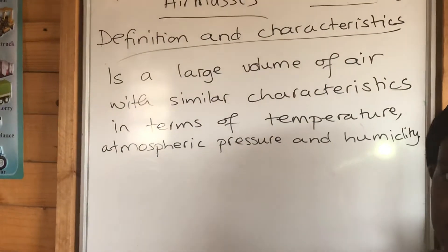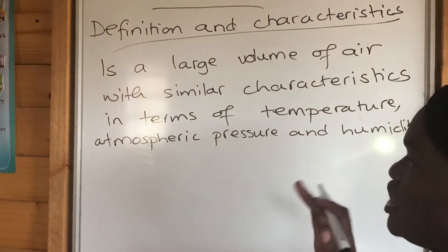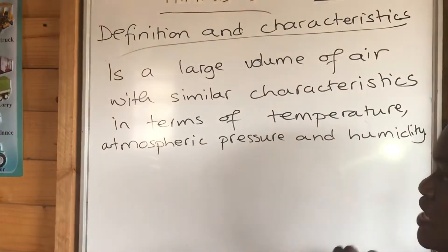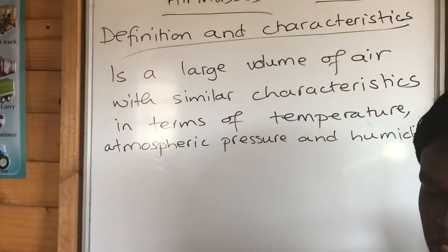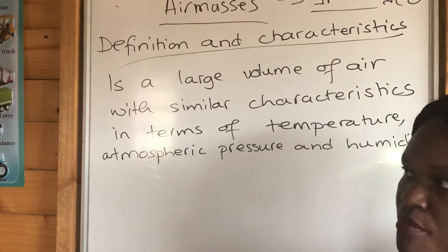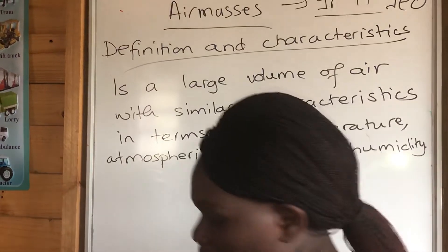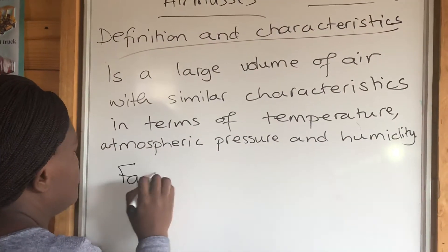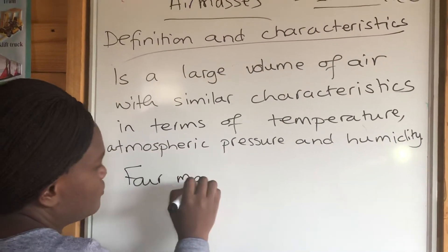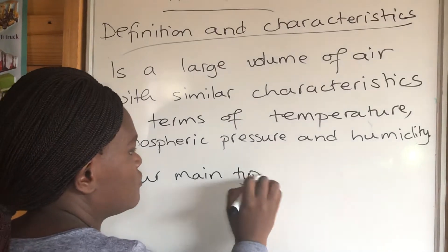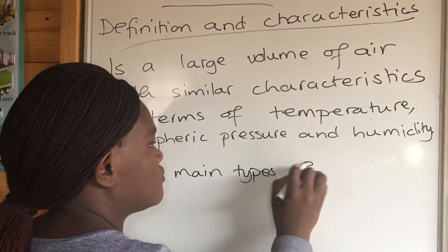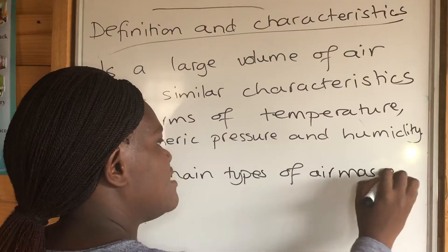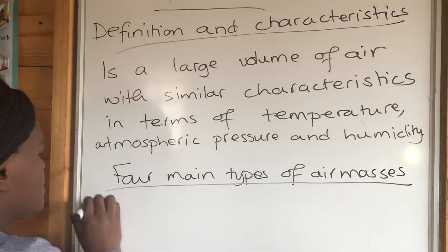AMSs tend to have similar characteristics in terms of the same temperature, atmospheric pressure, as well as humidity levels. We have four main types of AMSs — so what are these four main types?